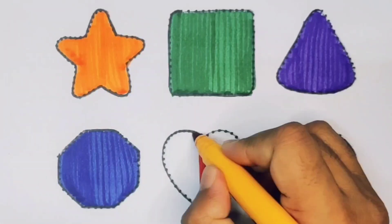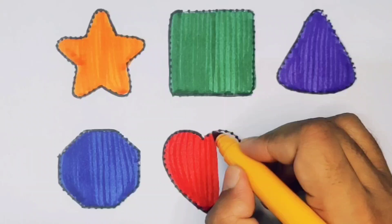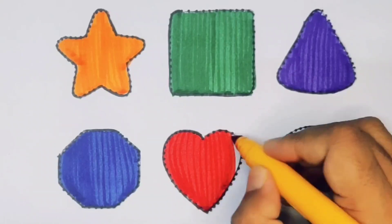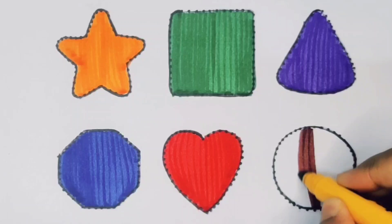Red color for the heart. Chocolate color for the circle.